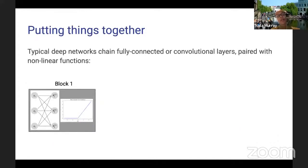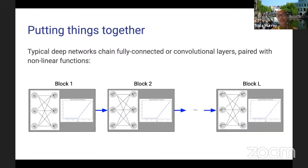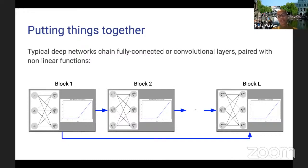Putting all the building blocks together: a typical deep convolutional network chains all these elements together — convolutional layers paired with non-linearities — and keeps stacking these blocks. The number and arrangement of blocks are chosen depending on many factors; this is where the art of architectural design comes in. Networks don't have to be simple chains — you can have skip connections — and in general they tend to be directed acyclic graphs.